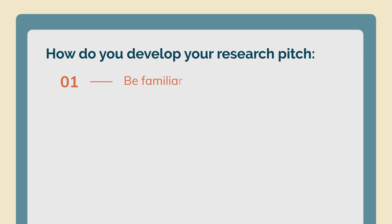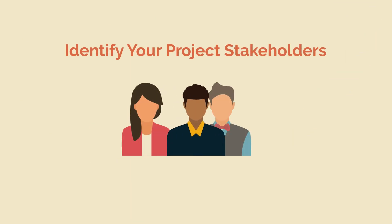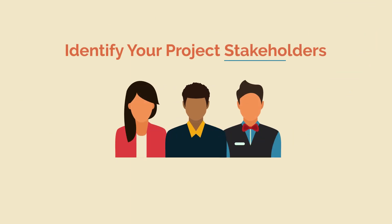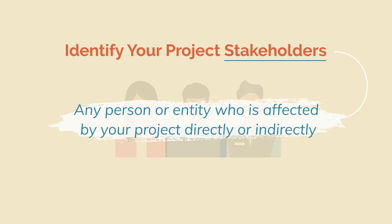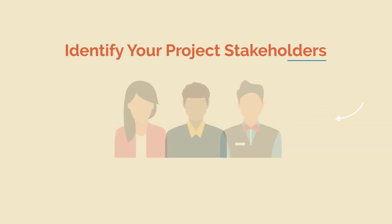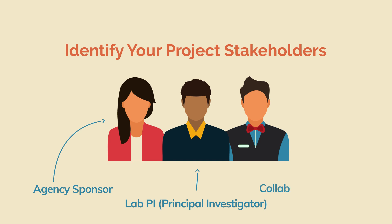First, you must be familiar with your audience and their values. Start by identifying your project's stakeholders. A stakeholder is any person or entity who is affected by your project directly or indirectly. These could include the agency which sponsored your research, the faculty who is the PI of your lab, the collaborators within or even outside your school, and even the public consumer who may be impacted directly.